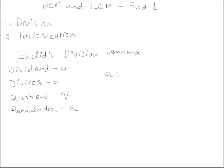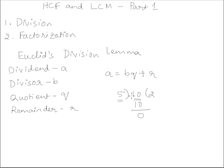What does this mean? If we take an example of 10 divided by 5, we know that 5 times 2 is 10, so the remainder is 0. In this case, 10 is the dividend, 5 is the divisor, 2 is the quotient, and 0 is the remainder. So we can write this as: 10 is equal to 5 times 2 plus 0. This is true for any positive integers a and b.